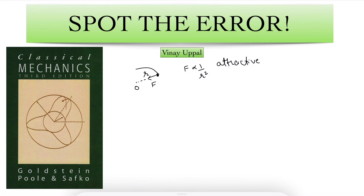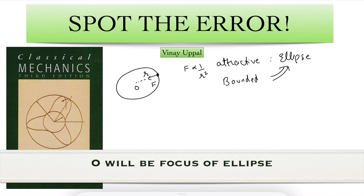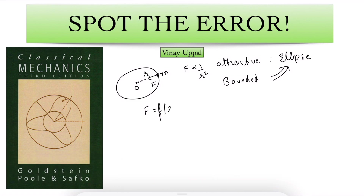Then the trajectory will be one of the conics. If we assume that the particle does not have enough energy to go to infinity, then it will be a bounded orbit, and a bounded orbit would mean it will be an ellipse or a circle. Circle is a special case of an ellipse. Now, if the force were some other function of R — still attractive and still pointing towards the fixed point O always — then the trajectory need not be an ellipse; it need not be one of the conic sections.